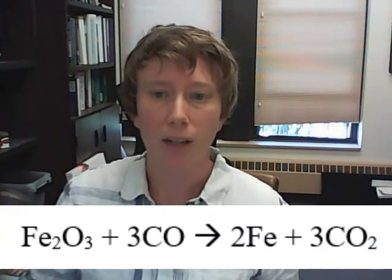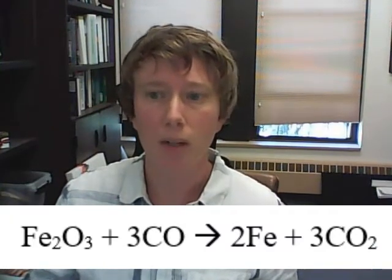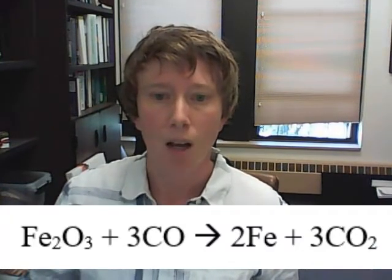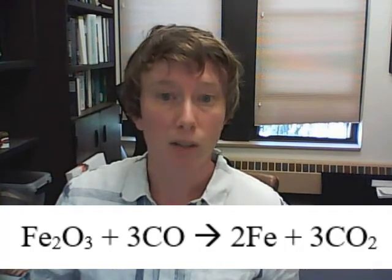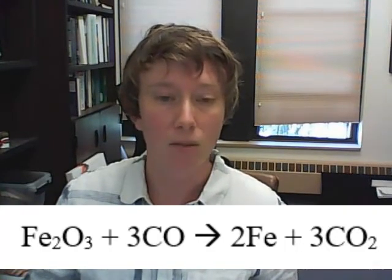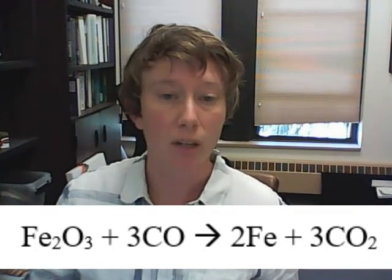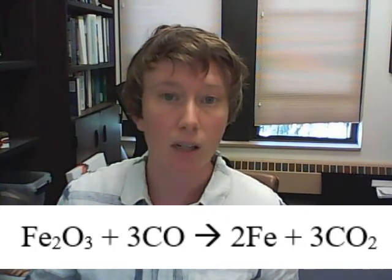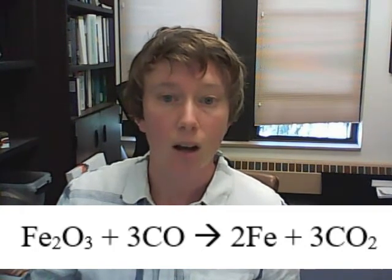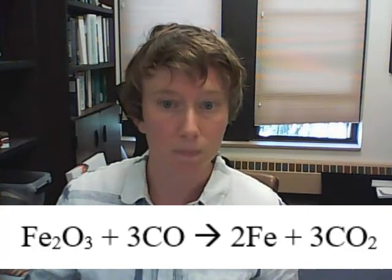Let's look at another example. Iron three oxide or hematite can be reduced by carbon monoxide in a furnace and this is one of the reactions that's involved in making steel. Here we have hematite reacting with carbon monoxide to produce iron and carbon dioxide.